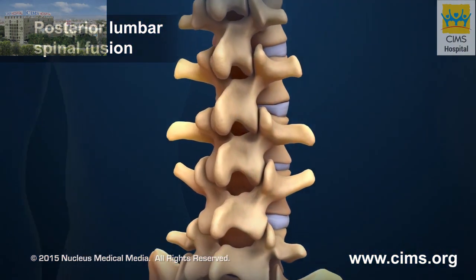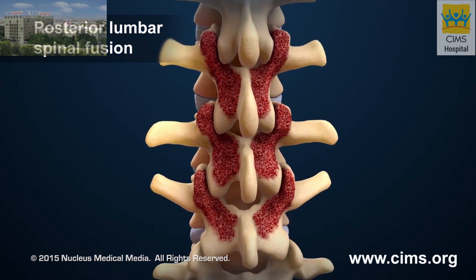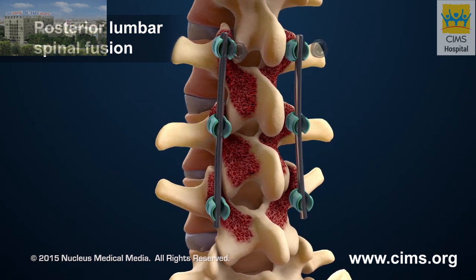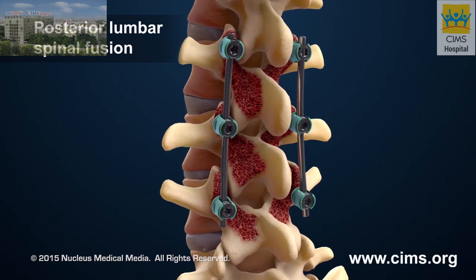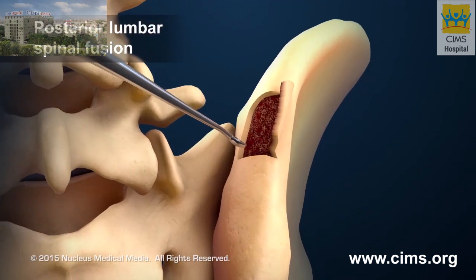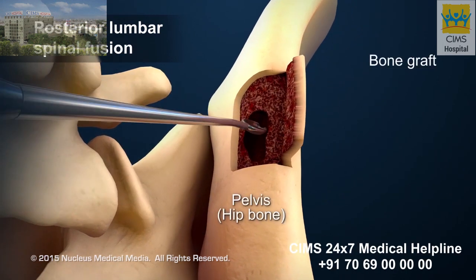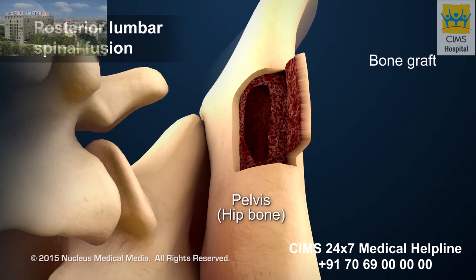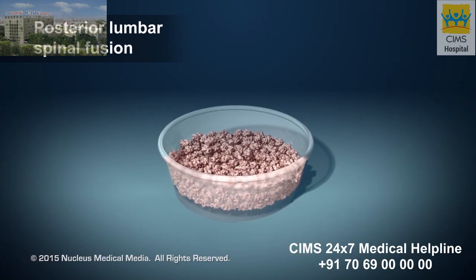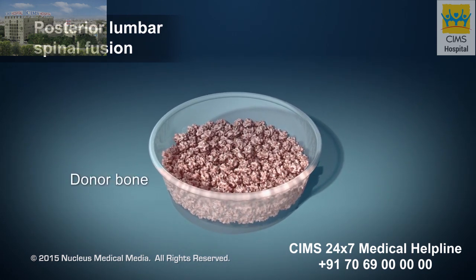The outer surfaces of the bones will be removed to prepare for fusion. The surgeon will place screws into the vertebrae, and rods will be placed alongside the vertebrae and attached to the screws. The surgeon may remove small pieces of bone from the pelvis to use as bone grafts, or may choose to use donor bone from a bone bank for grafting.